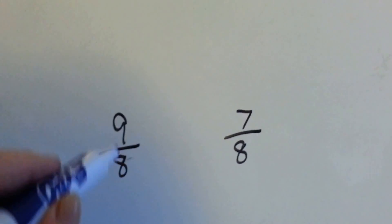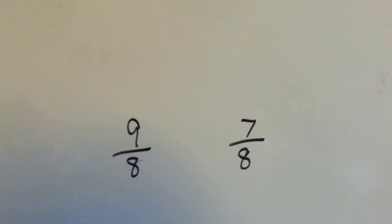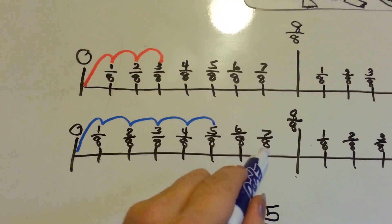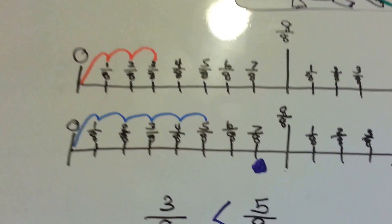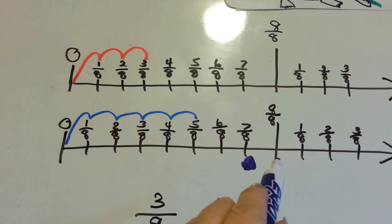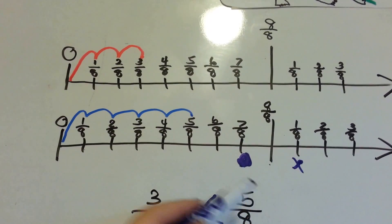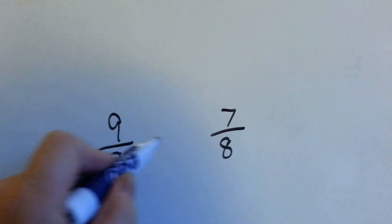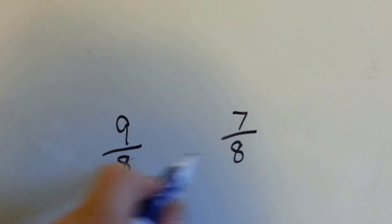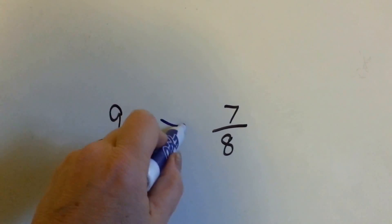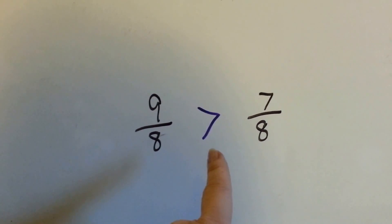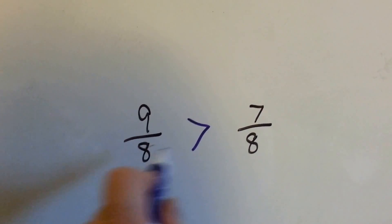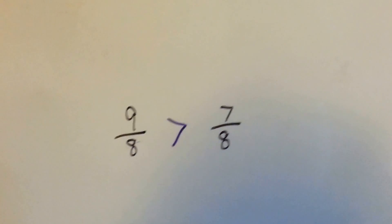Which one's bigger — nine-eighths or seven-eighths? Let's look at our number line. Here's seven-eighths right here. Where would nine-eighths be? Eight-eighths, nine-eighths — this would be nine-eighths. Which one went farther? The nine-eighths did, and the nine is bigger than the seven. Because when their denominators are the same, you can just say the nine is bigger than the seven. When the denominators are different, we have more work to do — we'll show you in the videos coming up. So, nine-eighths is bigger than seven-eighths.